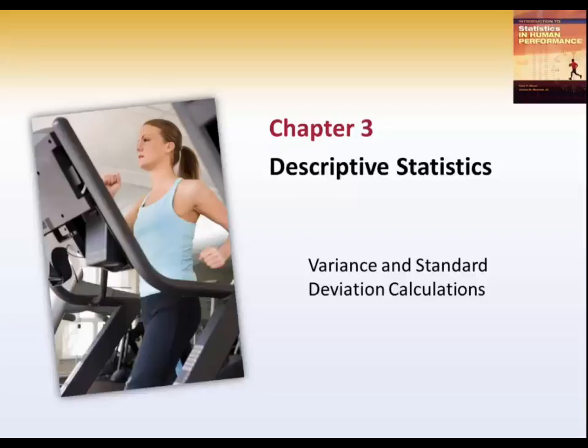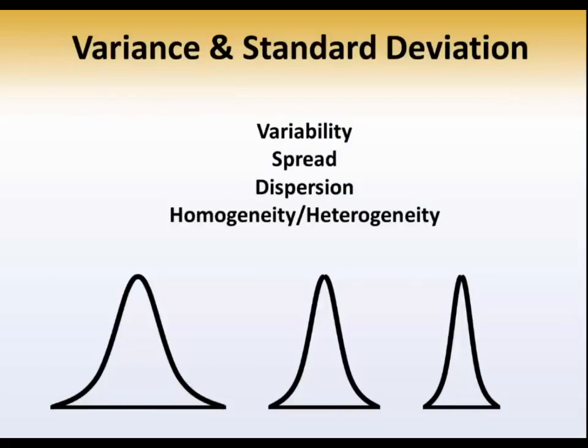While scores might all tend to center around the same point, they might have different degrees of variability. This has to do with the scatter of the scores in a distribution. Sometimes you'll hear the word spread or dispersion, homogeneity or heterogeneity.